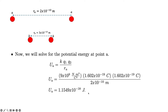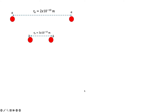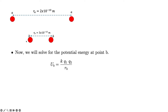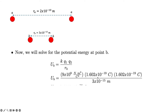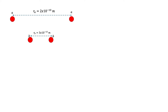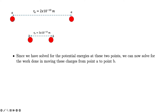The units work out correctly: C×C cancels with C squared, and m²/m leaves m, so Newton·meter gives joules — which is correct for potential energy. Now we solve for the electric potential energy at point B using the same equation, with R_B = 3×10⁻¹⁵ meters. The calculation gives U_B = 7.6992×10⁻¹⁴ joules.